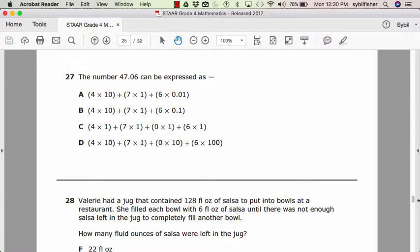Twenty-seven. The number forty-seven point zero six can be expressed as A, four times ten plus seven times one plus six times zero point zero one. Or B, four times ten plus seven times one plus six times zero point one. Or D, four times ten plus seven times one plus zero times ten plus six times one.